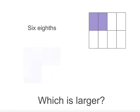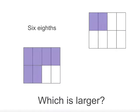So 6 eighths is 6 out of 8 equal pieces. And the image is showing 2 of 8 equal pieces, or 2 eighths. Now it is easy to see that 6 eighths is larger than 2 eighths.